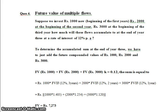Hello everyone, let us now understand the problem on future value of multiple flows. Suppose we invest Rs. 1000 now at the beginning of the first year, Rs. 2000 at the beginning of the second year, Rs. 3000 at the beginning of the third year. How much will these flows accumulate to at the end of year 3 at a rate of interest of 12% per annum?